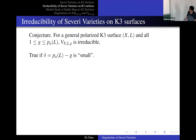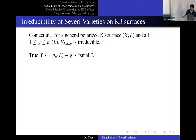This is obviously true when you take the number of nodes p_a(L) minus g is small, because if delta is small, the delta nodes impose independent conditions on the linear system. When delta is small, this is true.